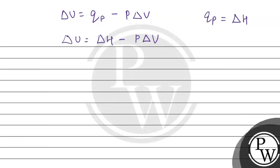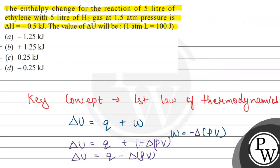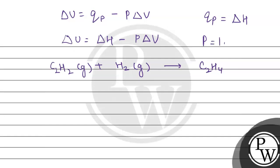According to the given question, ethylene gas — the chemical formula for ethylene is C2H2 — reacts with hydrogen gas to form C2H4. It is given that 5 liters of ethylene reacts with 5 liters of hydrogen gas, pressure is given as 1.5 atmosphere, and delta H is given as minus 0.5 kJ.